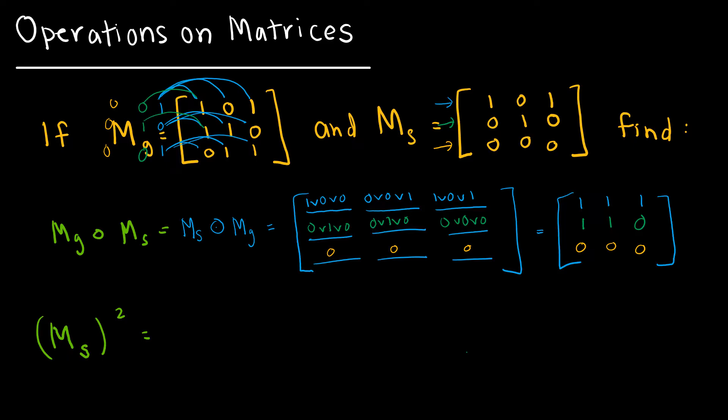Now if I take matrix S and square it, it's really the same thing that we just did except I'm doing it with matrix S twice. So again I'm going to take 1, 0, 1 and I'm just multiplying matrix S by itself. So I'm doing the exact same thing. That would give me 1 or 0 or 0, 0 or 0 or 0, 1 or 0 or 0, which for my first row gives me 1, 0, 1.